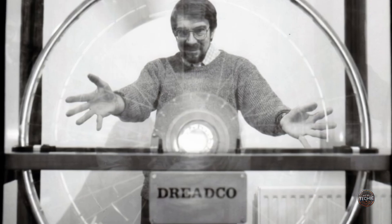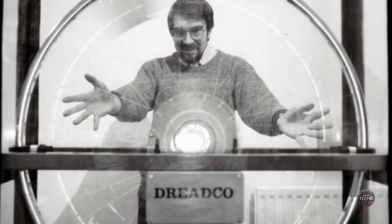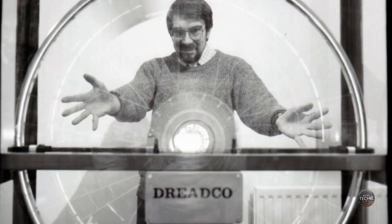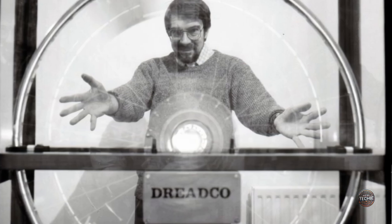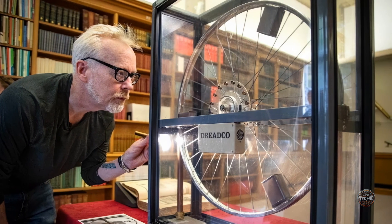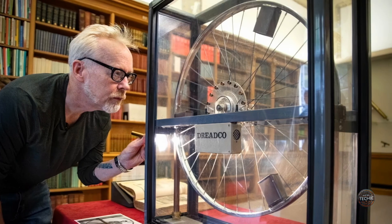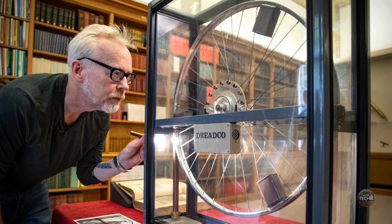A notable instance of a perpetual motion machine can be found at the Royal Society, created by scientist David Jones using the alias Daedalus. The wheel has been in motion for many years, although it does need some unspecified adjustments from time to time.